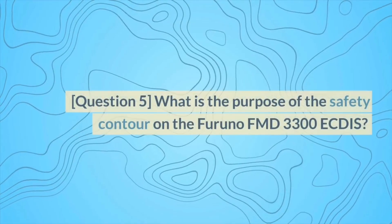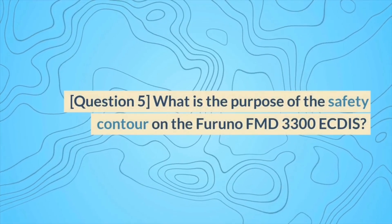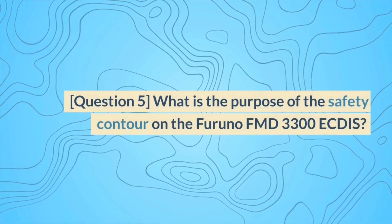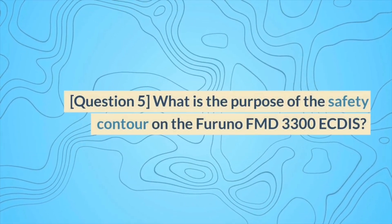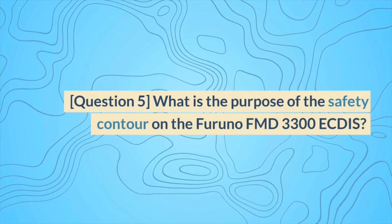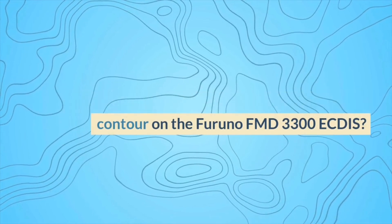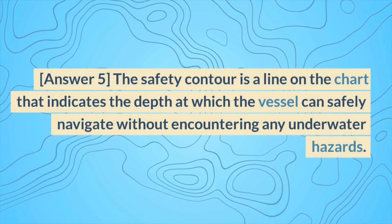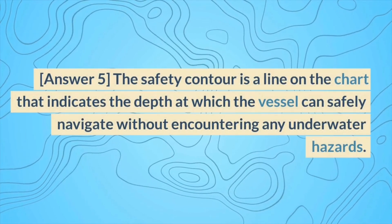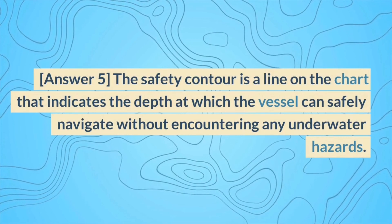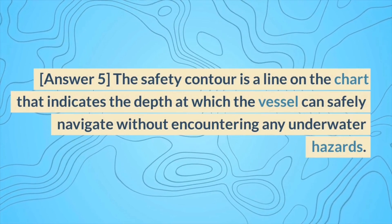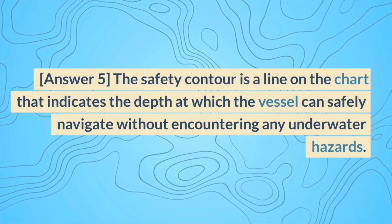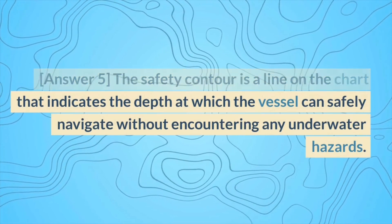Question 5. What is the purpose of the safety contour on the Furuno FMD 3300 ECDIS? Answer 5. The safety contour is a line on the chart that indicates the depth at which the vessel can safely navigate without encountering any underwater hazards.